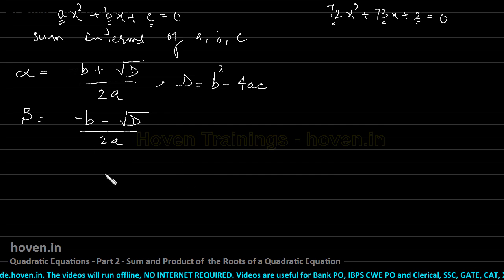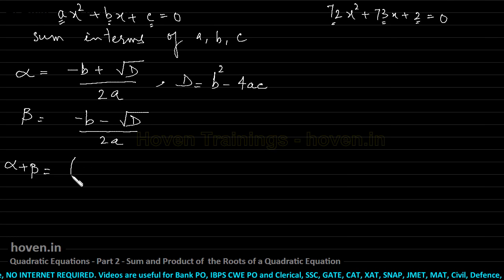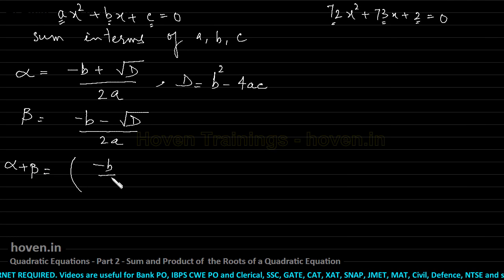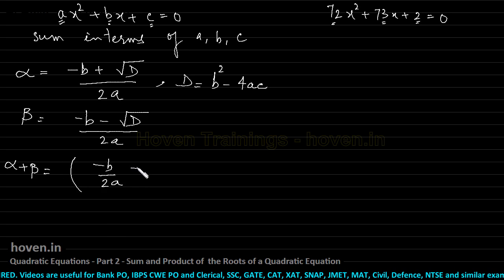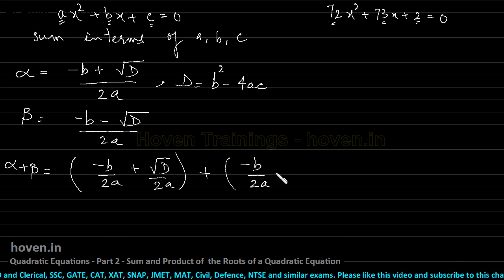Now let us add the two roots. So what will the addition be, alpha plus beta will become equal to minus b by 2a plus square root of d by 2a plus, I will explain each thing in a moment, but let me write it all.